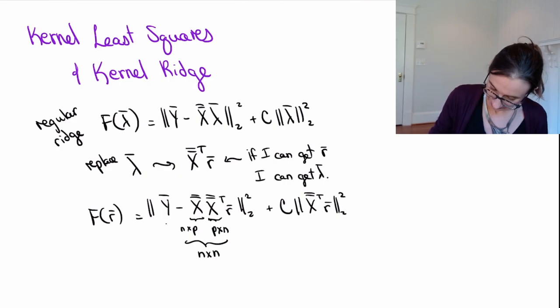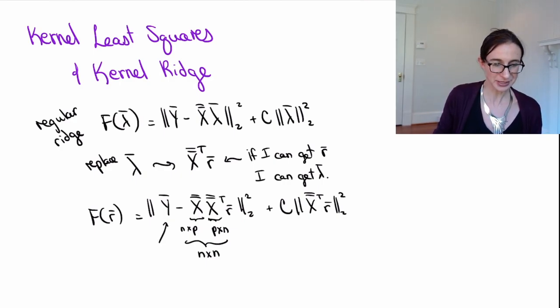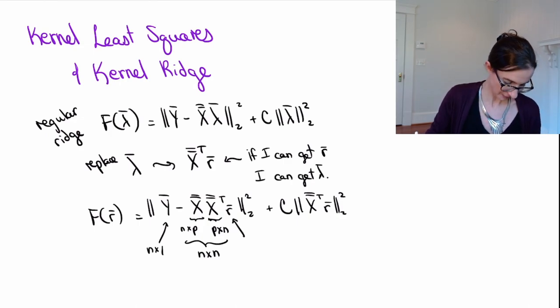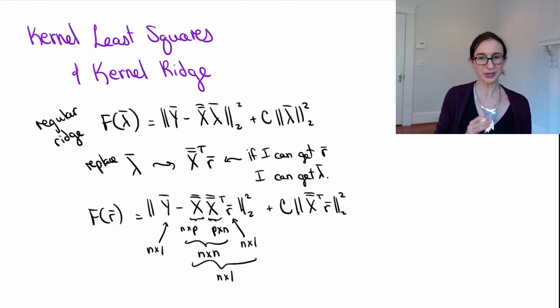Okay, and then just to do the rest of these sizes here. So this is n by 1 and this is n by 1 here. And so that thing together is n by 1. So it's an n by 1 vector minus n by 1 vector. Okay, great, good.